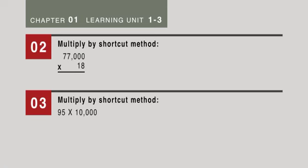In number 2, multiply by the shortcut method. You got 77 times 18, which multiplies out to be 1,386, but how many zeros are in the problem? 5, so we add 5 more zeros. Starting from right to left, put a comma every 3 positions. It comes out to be 138,600,000,000.